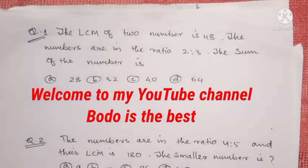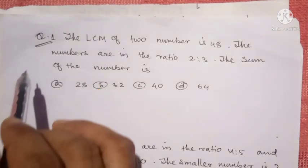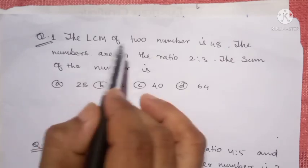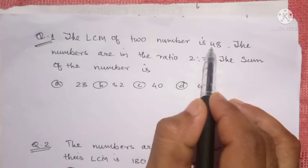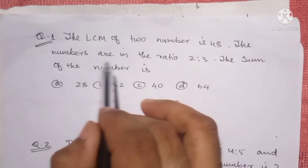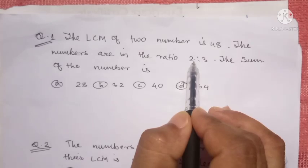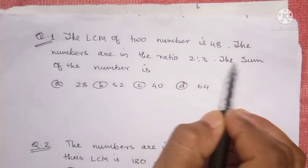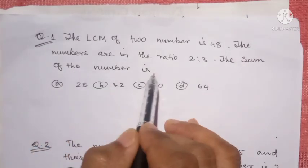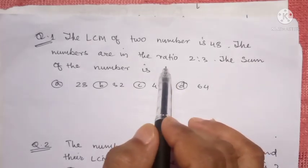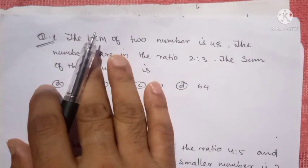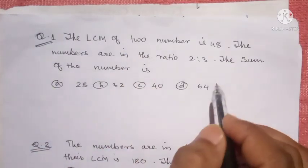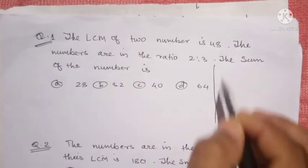The LCM of two numbers is 48. The numbers are in a ratio. So two numbers are in the ratio. In this video, we are going to give them another class. The first question is 2.